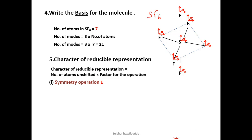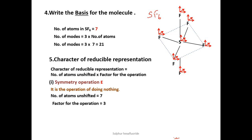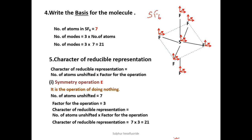First, we perform the identity operation on the basis. Identity is the operation of doing nothing, so all atoms remain unaltered and the number of unshifted atoms is seven. The factor for the operation is three, so the character of the reducible representation is seven times three equals twenty-one. The factor of three comes from the transformation matrix for identity, which has diagonal elements 1, 1, and 1. The character is the sum of the diagonal elements: 1 + 1 + 1 = 3.